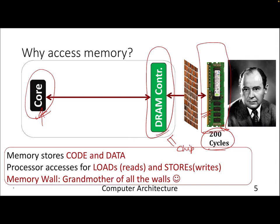The DRAM itself sits off-chip, and its frequency is slower than the processor's frequency — that's why it manifests as hundreds of cycles. This is a well-known problem called the memory wall problem, because it creates a wall when getting data from memory. The primary reason is that historically the rate at which DRAM frequency increased was much slower compared to the rate at which processor frequency increased. This is also known as the grandmother of all walls in computer architecture.